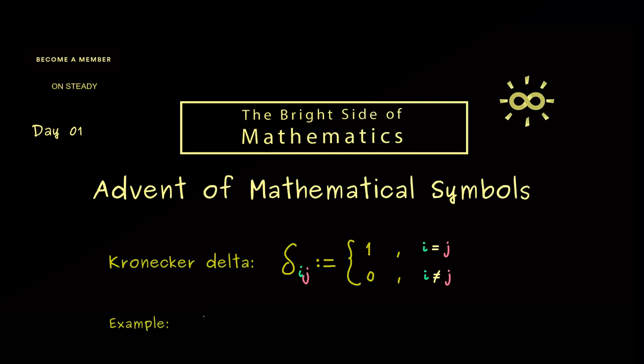For example, when you write delta 1 2, it just stands for the number 0. On the other hand, delta 5 5 stands for the number 1. So you see, the Kronecker delta is a very simple symbol, but nevertheless it can be very helpful when you calculate with sums, for example.